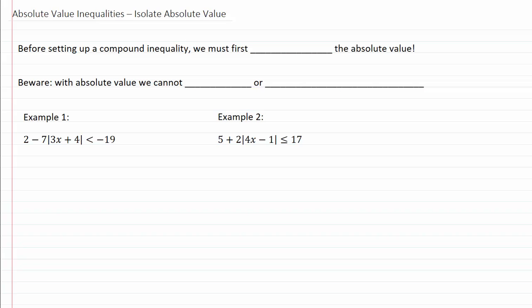Absolute value inequalities: isolate the absolute value before setting up a compound inequality. We must first isolate the absolute value. Beware — with the absolute value we cannot distribute through the absolute value or combine unlike terms. Two common mistakes. Let's take a look at our examples.